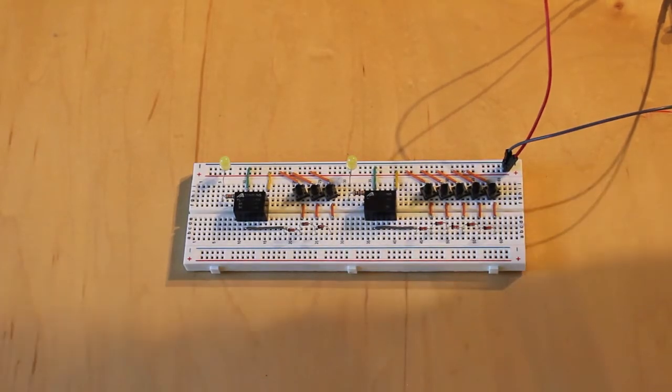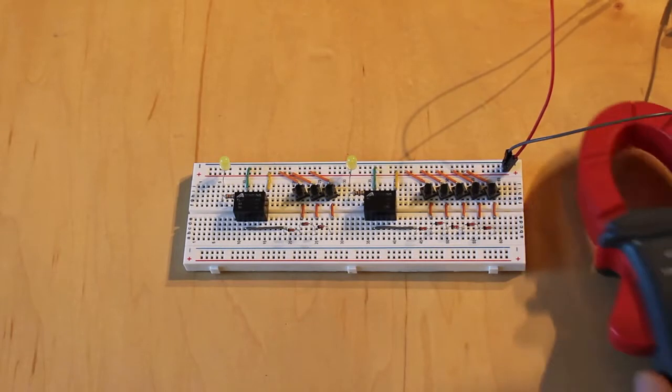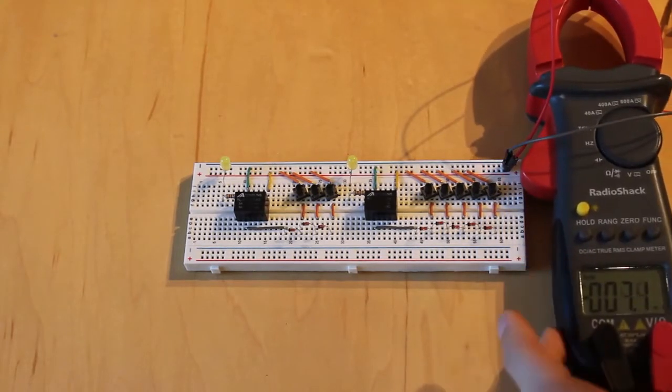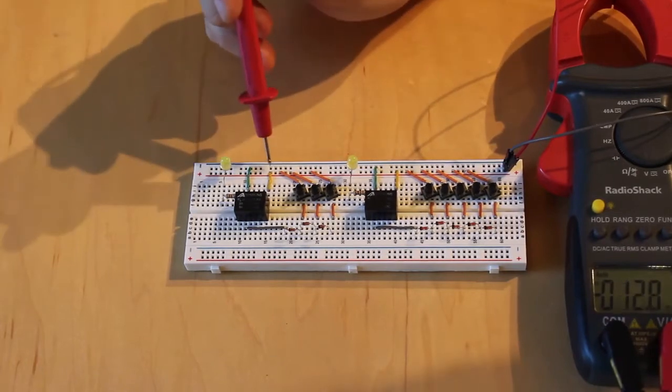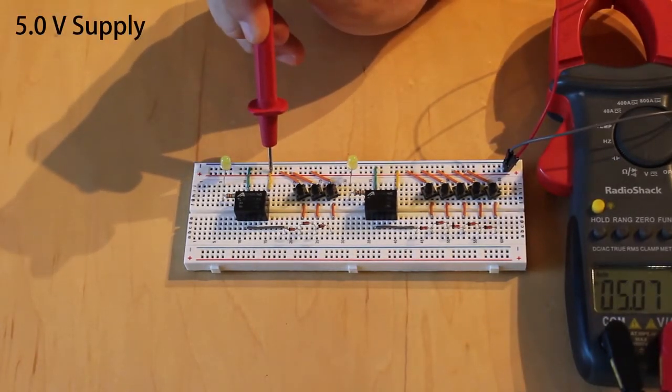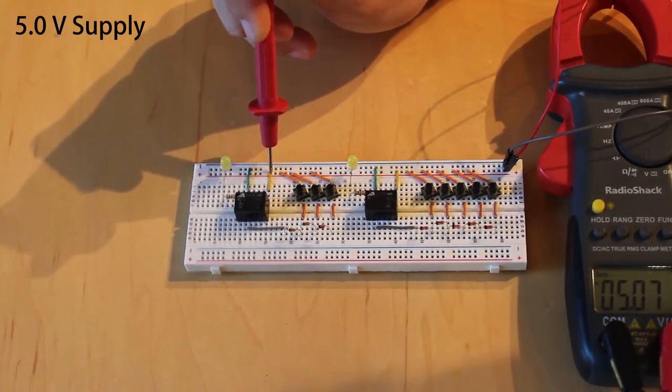And so each diode that the voltage has to flow through experiences a voltage drop lowering the voltage on the other end. And we can actually see that pretty well if we just use a digital multimeter here. So you can see here that I've got the multimeter set up to DC.